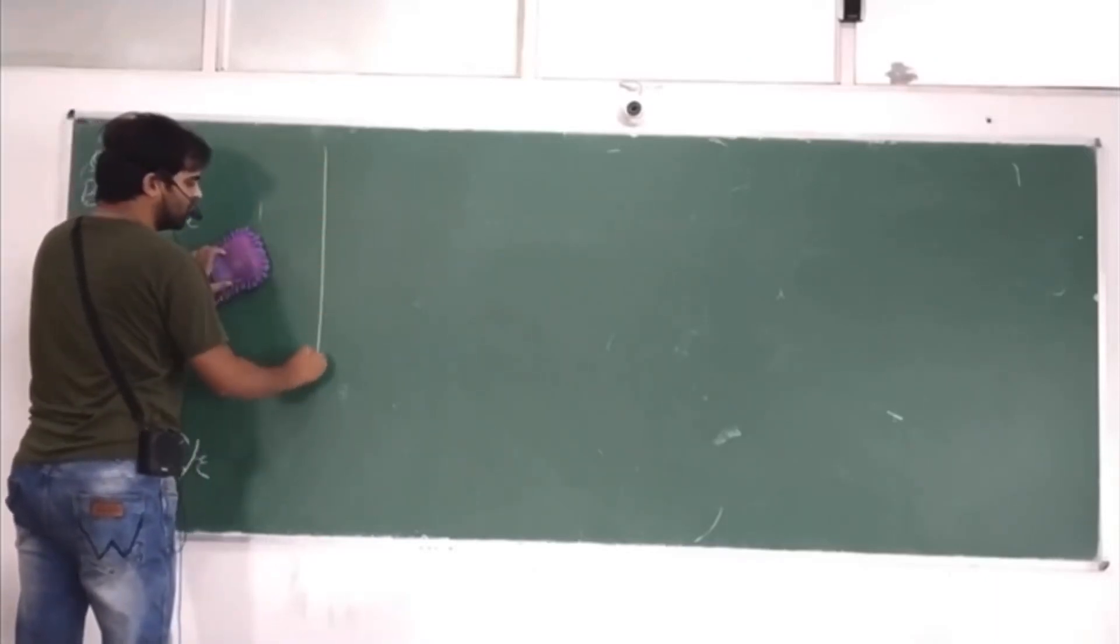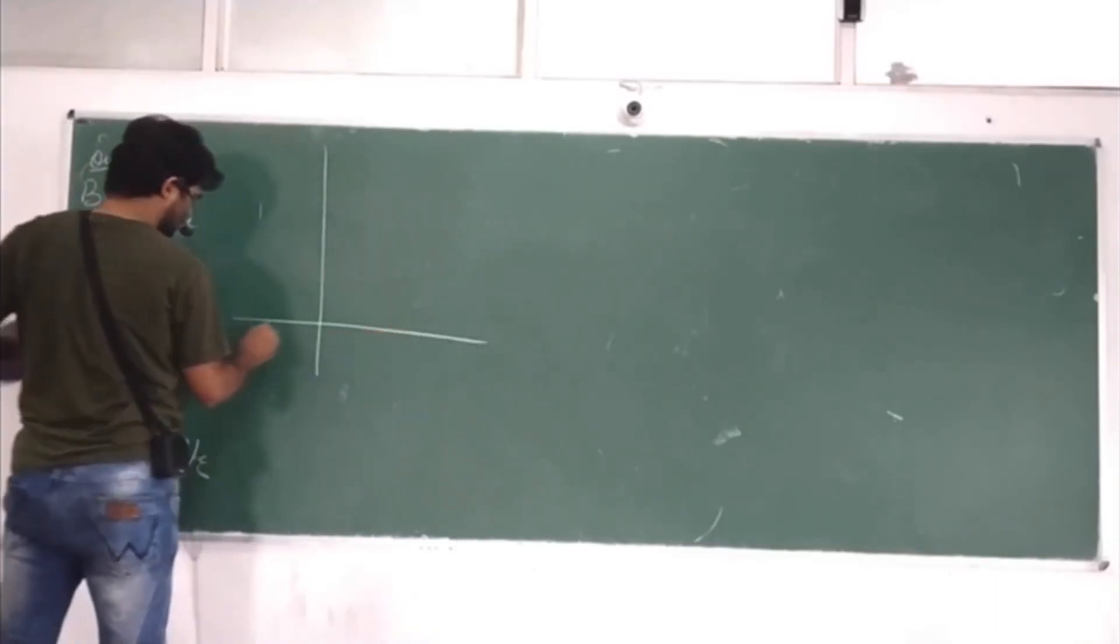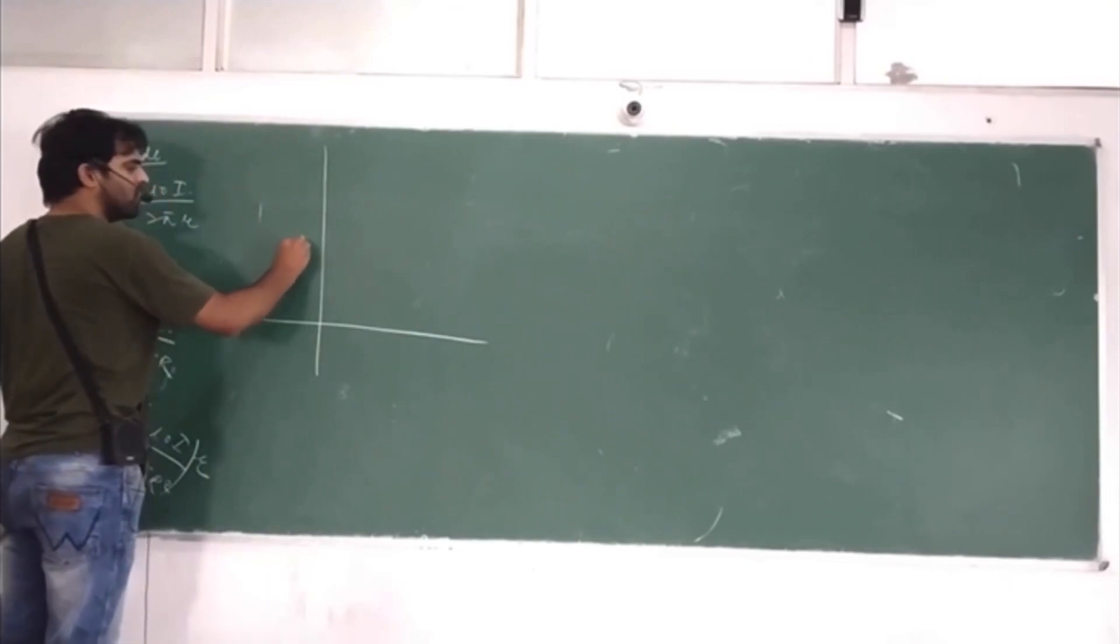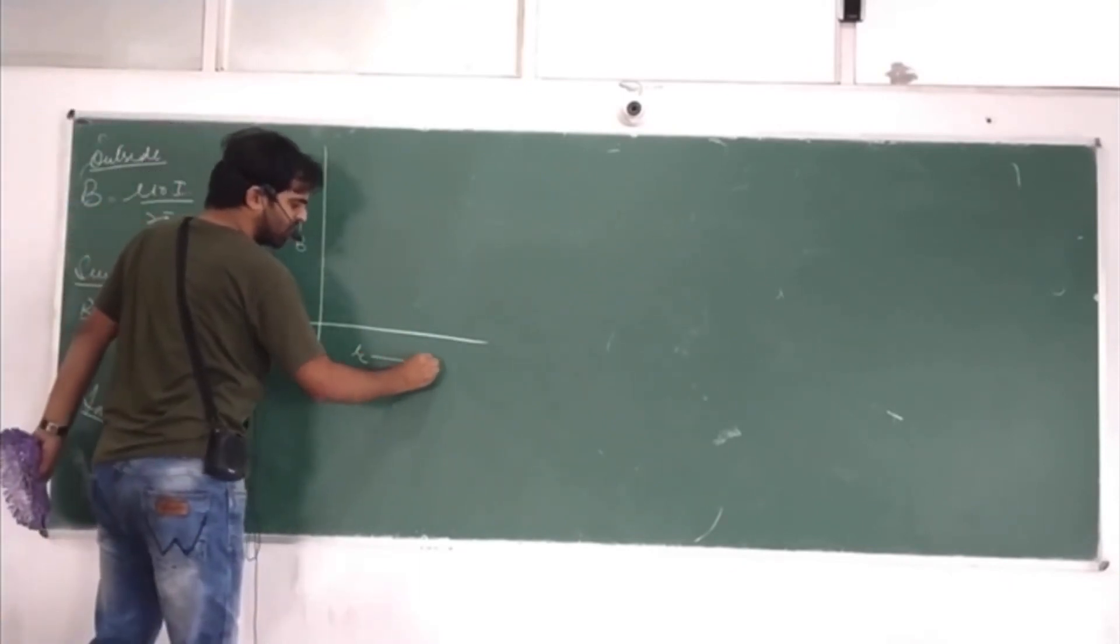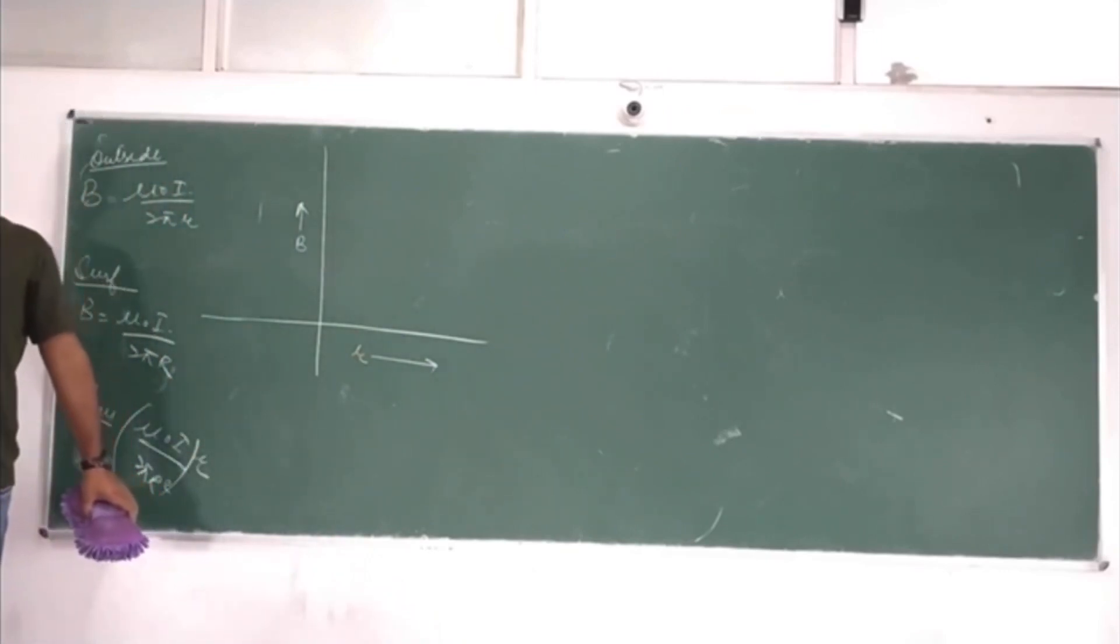Plot graph: B vs r. B stands for magnetic field, small r stands for distance. In the middle of the axis, there is a graph.